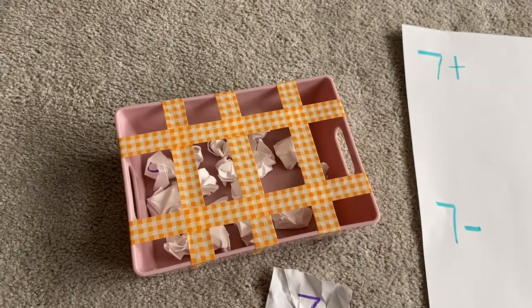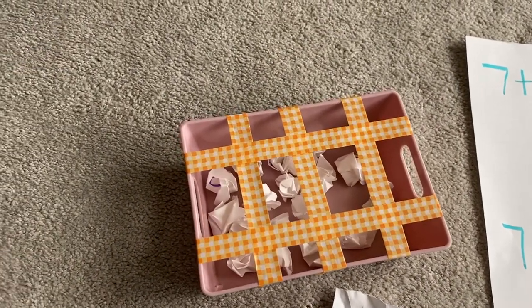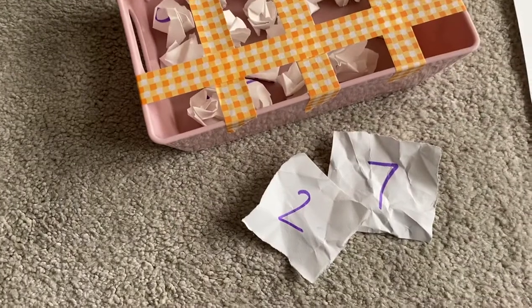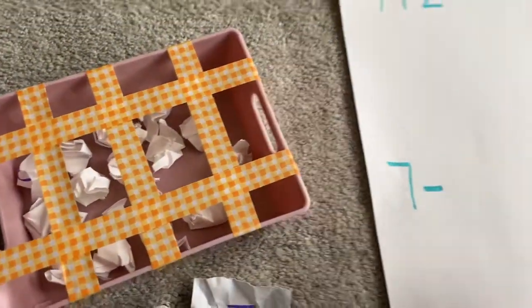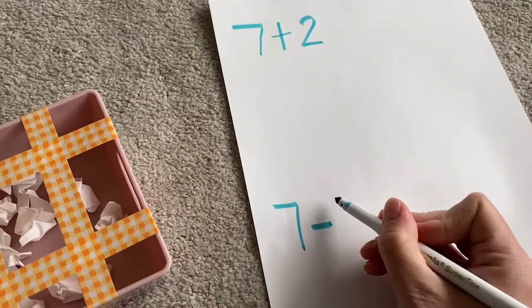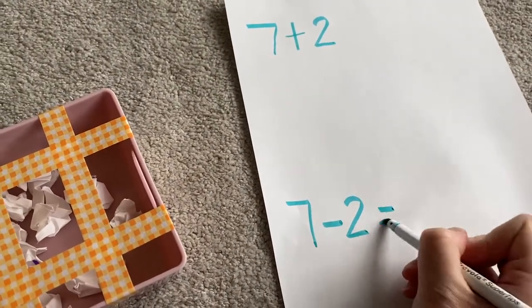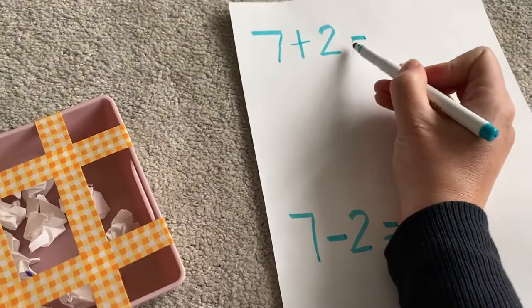And again I'm going to unravel it. Oh, what's that number? It's a two. So we can take this one away as well. So we've got seven add two and seven take away two. Don't forget your equal sign because that's the way we find our answer.